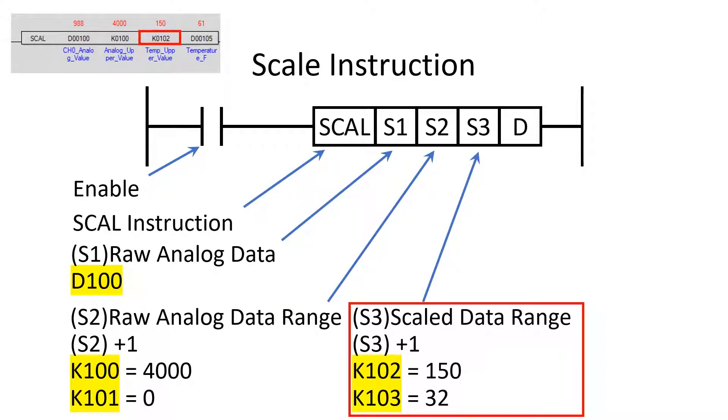The S3 operand stores the scaled range of the analog device. In this program, the scaled range is 32 to 150 degrees with a 1 degree resolution. S3 uses two memory locations just as S2. In this program, it is K102 and K103 as shown.